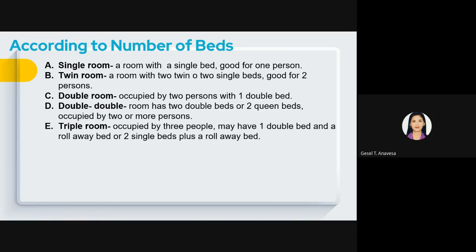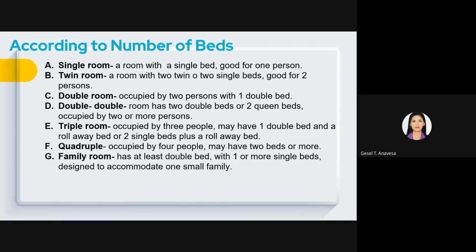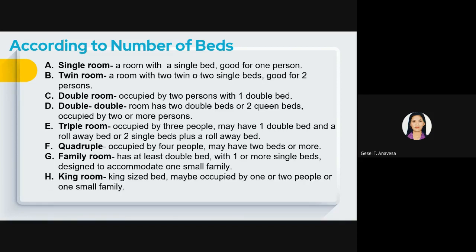A triple room is occupied by three people. It may have one double bed and a rollaway bed, or two single beds plus a rollaway bed. A quadruple room is occupied by four people and may have two or more beds — at least one double bed plus one or more single beds — designed to accommodate one small family. A king room has a king-size bed and may be occupied by one or two people or one small family.